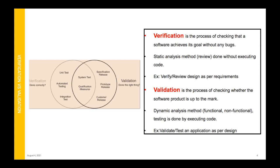Validation is a dynamic analysis method. Each requirement would be split into functional and non-functional, and we have to make sure that when we develop something it covers both. The difference from static analysis is that dynamic analysis happens after we execute the code. For example, we validate or test an application to check whether it is as per the design — we have to execute something to be able to validate it.